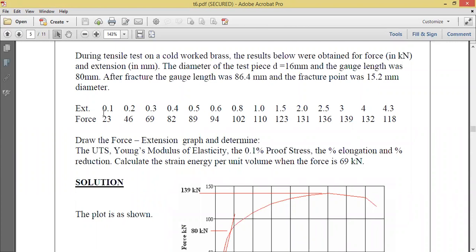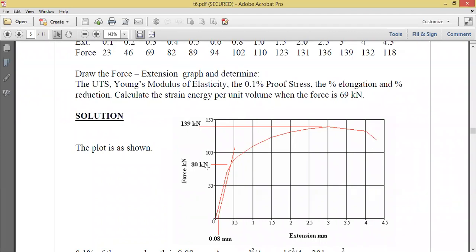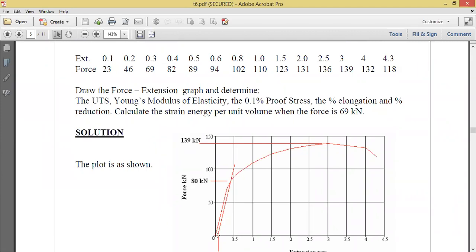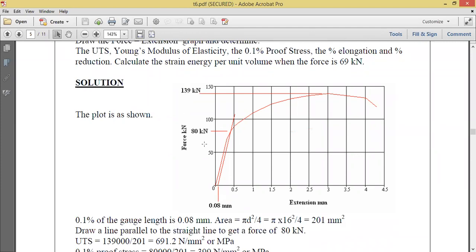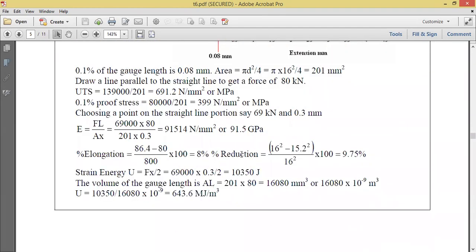You'll be given these figures - values of extension and force. Force is always the y-axis, extension is always the x. From these values, you are asked to determine the UTS, the Young's modulus of elasticity, 0.1 proof stress, the percent elongation and percent reduction. So obviously, you begin by first plotting the graph. So 0.1 extension somewhere there against 23, and so on. This becomes your UTS, force at UTS there. That's your proof stress where it hits the curve. You get the value there on the y-axis - that's your force at proof.